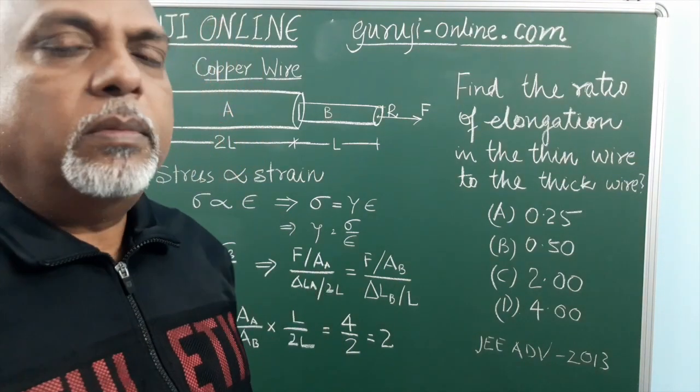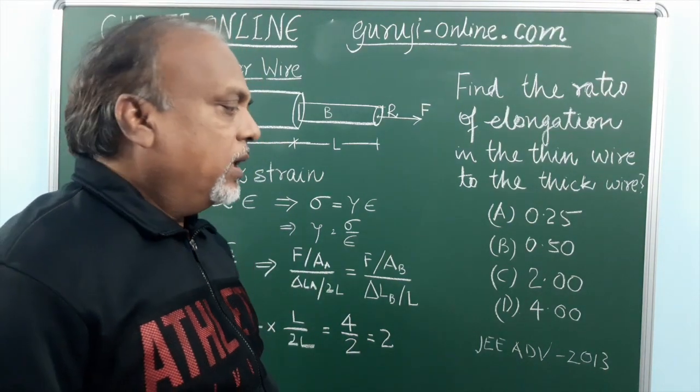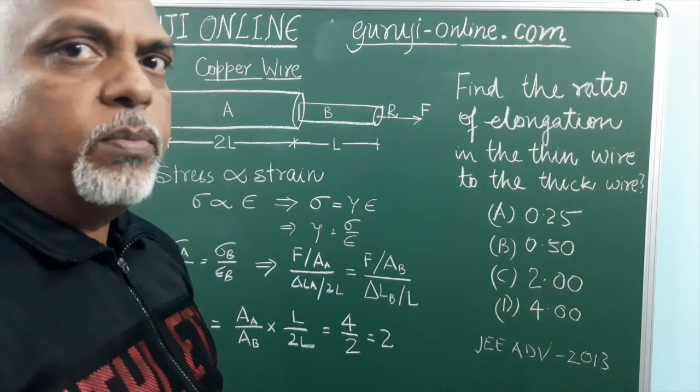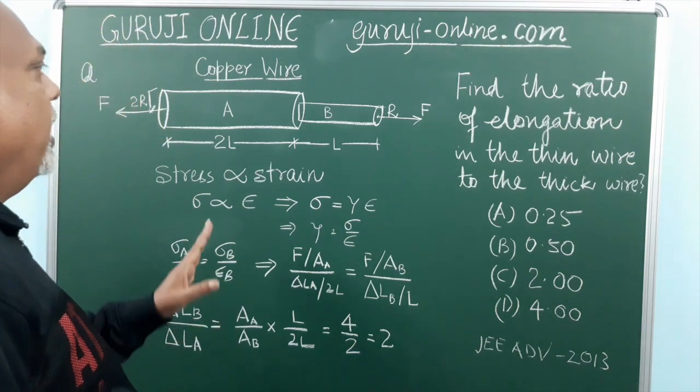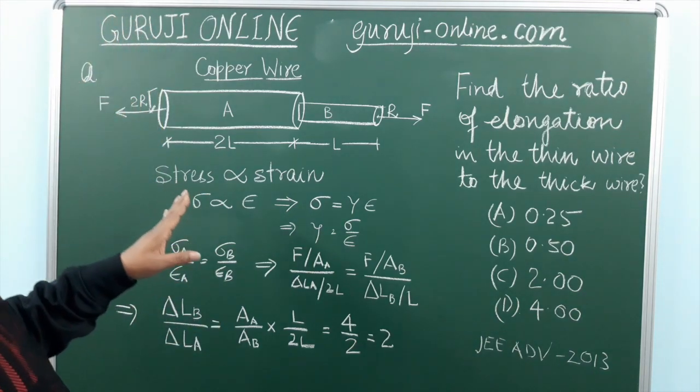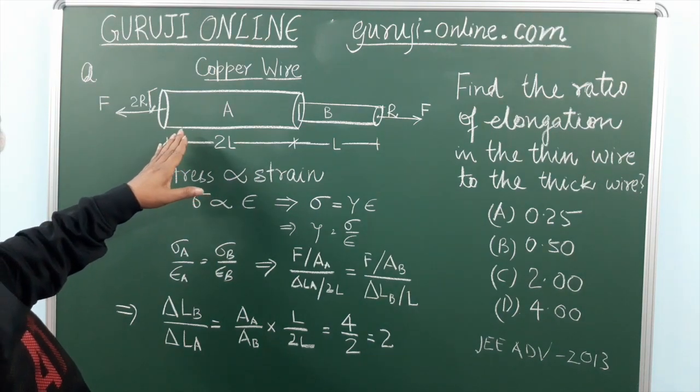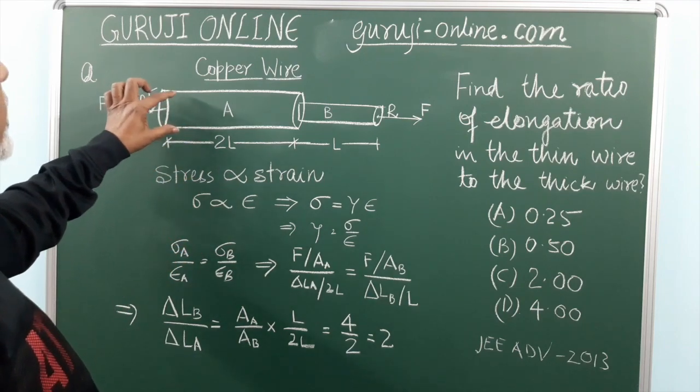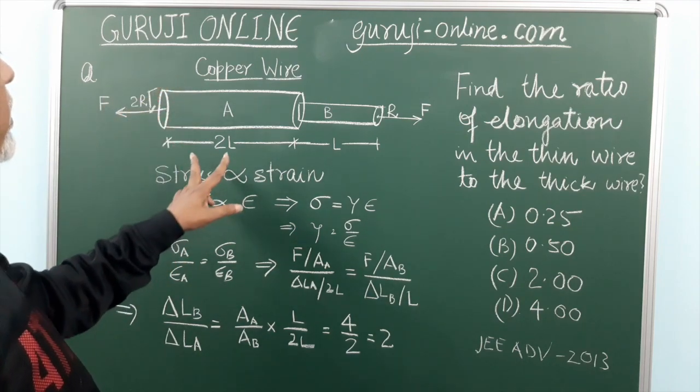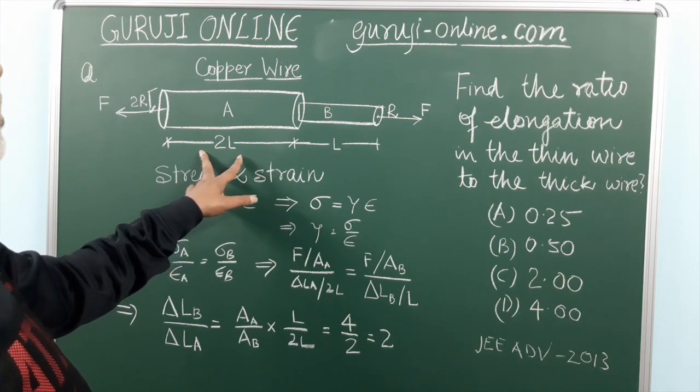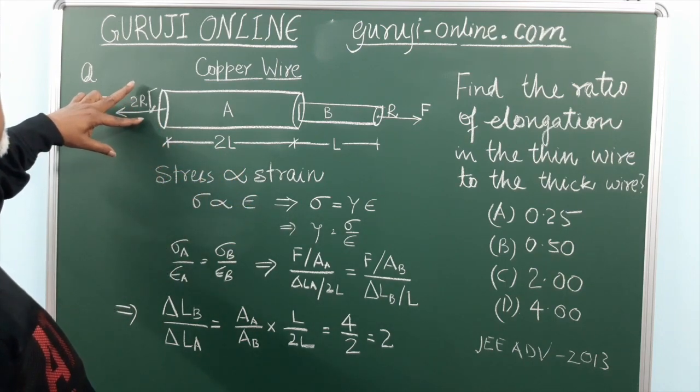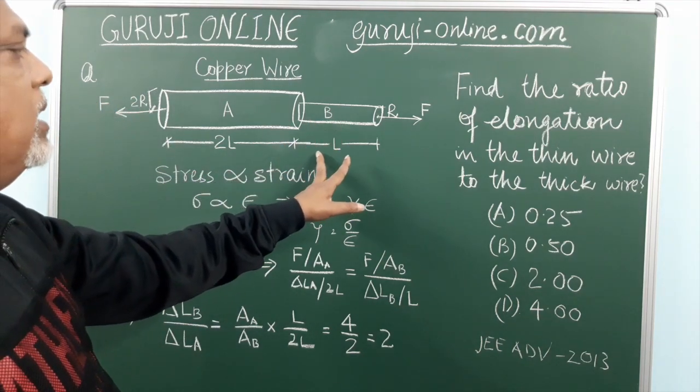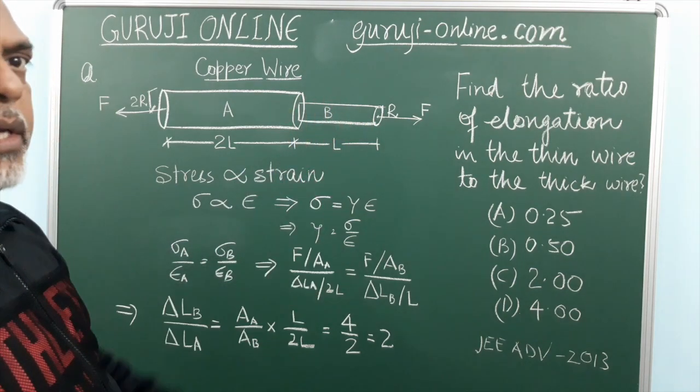This problem I have listed on the board has come in 2013. This problem is like this: we have a copper wire with different diameters. This portion whose length is 2L has got radius as 2R and this portion whose length is L has got radius as R.